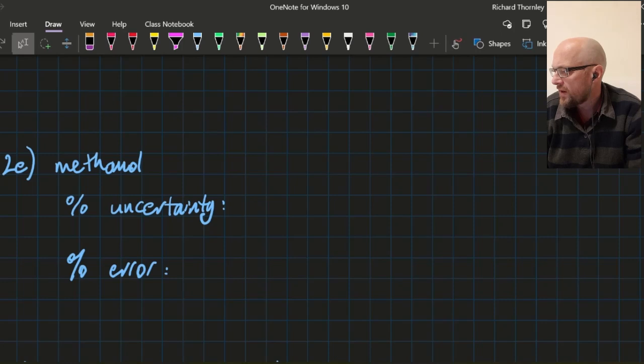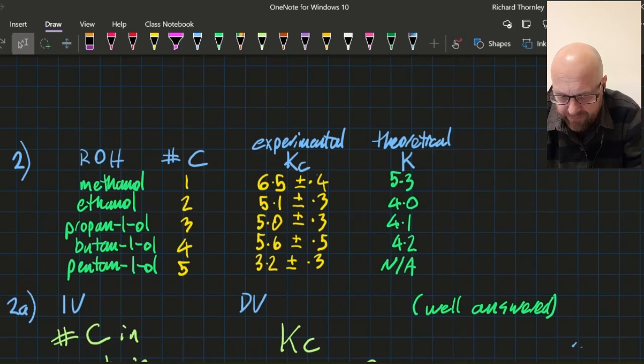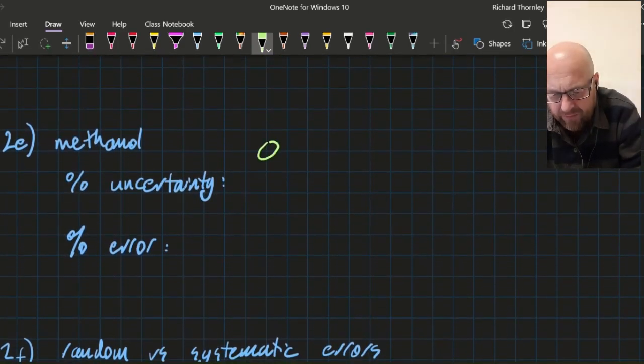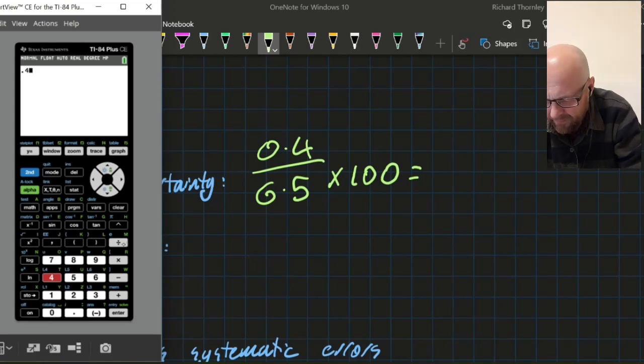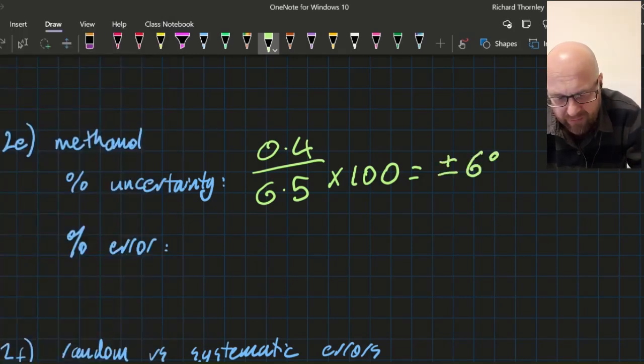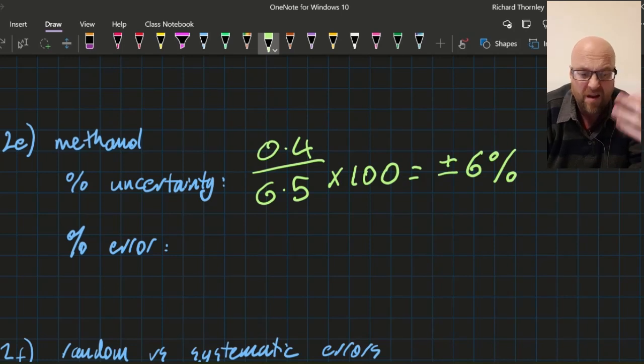Calculate the percentage uncertainty. Percentage uncertainty is the uncertainty over the value times 100. For methanol, experiment one, I'm going to take my uncertainty divided by the value times 100. So it's going to be 0.4 divided by 6.5 times 100. I'm going to stick with one sig fig because uncertainties are normally there, so it's going to be plus or minus 6 percent. So if my results are out by less than 6 percent, I can blame the equipment.